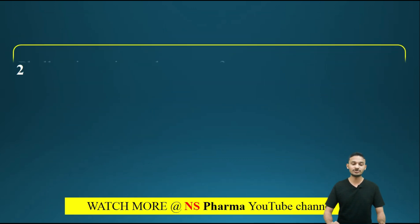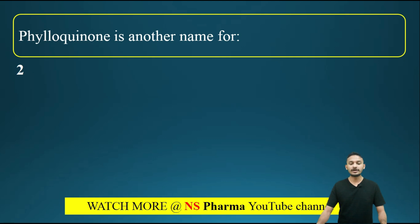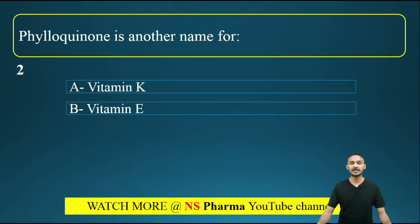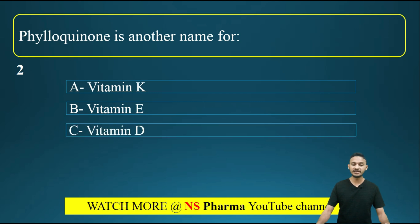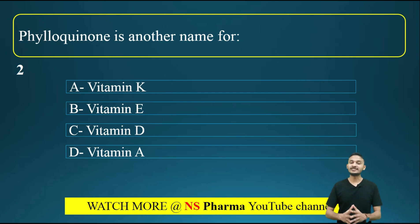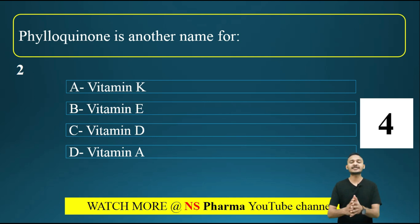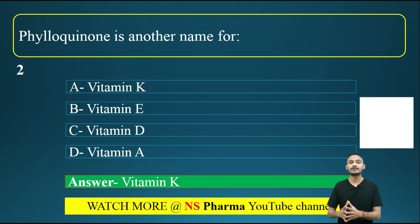Now moving to question number 2. Phylloquinone is another name of which vitamin? Options are: option A, vitamin K; option B, vitamin E; option C, vitamin D; option D, vitamin A. Each correct answer carries one mark. Once all 10 questions are over, you can comment your total marks. The correct answer is option A, that is vitamin K.